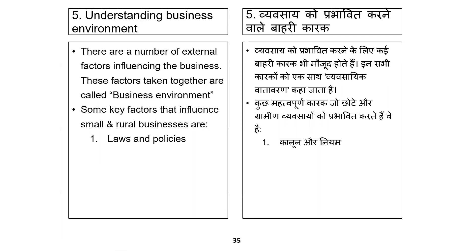The first external activity is law — new rules and regulations, especially new business laws. The law of business can put pressure on costs. For example, if the government has made a rule that we will ban the plastic bag, it will not be allowed to use because it increases production costs.